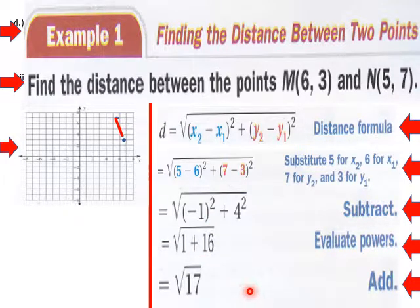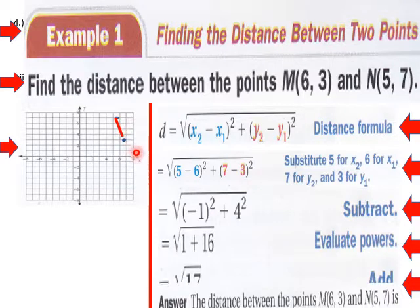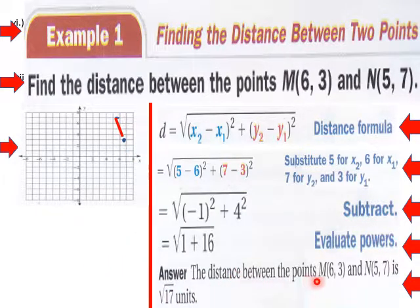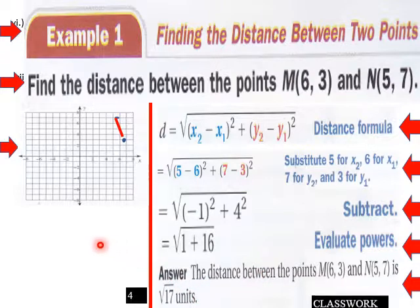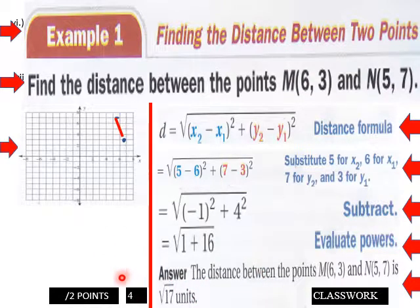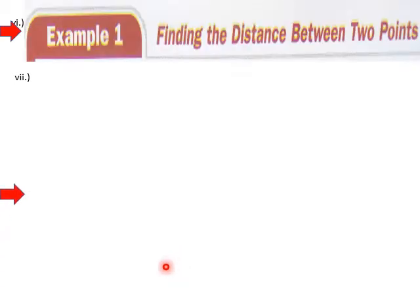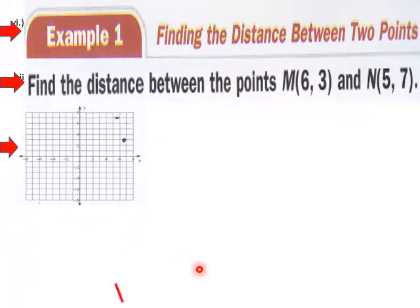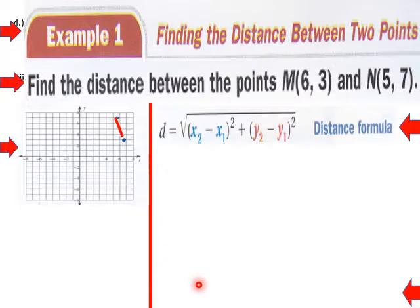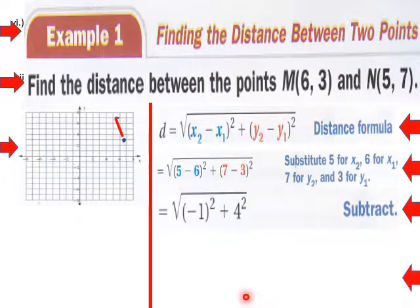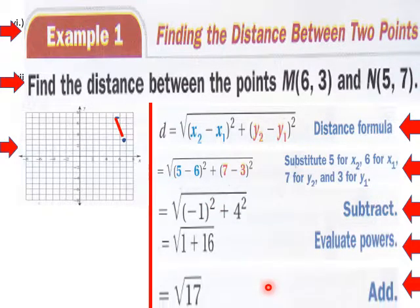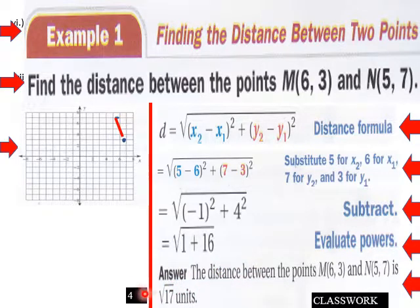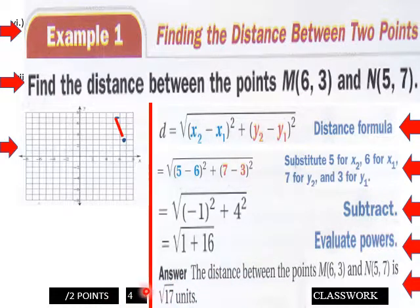So it will be the square root of 17 for the distance of this line. The distance between these two points would be the square root of 17 units. We do this again for you to review. It's the square root of 17 units.